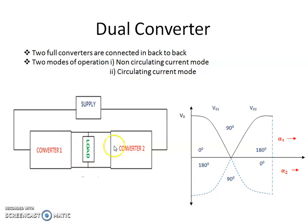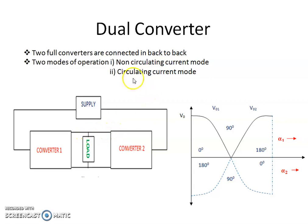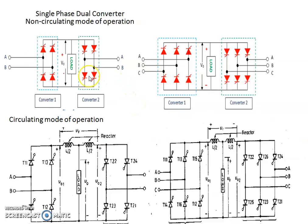When both converters operate simultaneously, there is an output voltage V01 for converter 1 and output voltage V02 for converter 2. If there is a difference between converter 1 output voltage and converter 2 output voltage, there is a circulating current. In the ideal case, we assume there is no circulating current, but in practice there is a circulating current. In order to reduce the effect of the circulating current in the circulating mode of operation, we place an inductor in series with the output circuit of both converter 1 and converter 2.